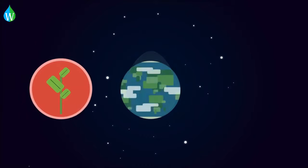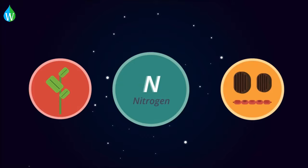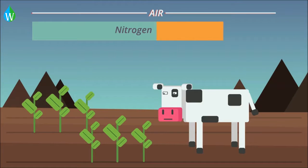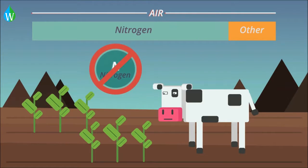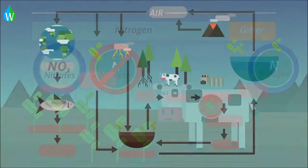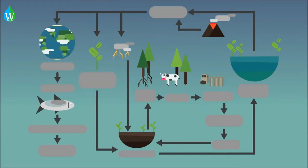Nitrogen is essential to life. Plants and animals need nitrogen to make proteins, and proteins are the building blocks of cells and their full life. Nitrogen makes up 78% of the air; however, neither plants nor animals can take nitrogen directly from the air because nitrogen is so unreactive. However, plants are able to take nitrogen compounds such as nitrates from the soil, and then animals eat these plants, therefore providing animals with a source of nitrogen. In this video we are going to look at the nitrogen cycle — the movement of nitrogen through the environment.